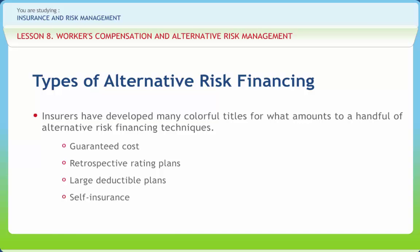Large deductible plans are currently very popular. Self-insurance is often the least expensive risk financing arrangement. It is the retention of loss obligations and payment of those obligations as they become due. Self-insurance is distinguished from non-insurance in that self-insurance makes a formalized accrual of liabilities. Captive insurance is a formalized method to pre-fund risk through an insurance subsidiary called a captive. Captives are typically owned by a parent company or a related party. Captive insurers are usually established in a favorable domicile, minimizing regulation of these special-purpose insurers, understanding that most captives are a form of self-insurance.